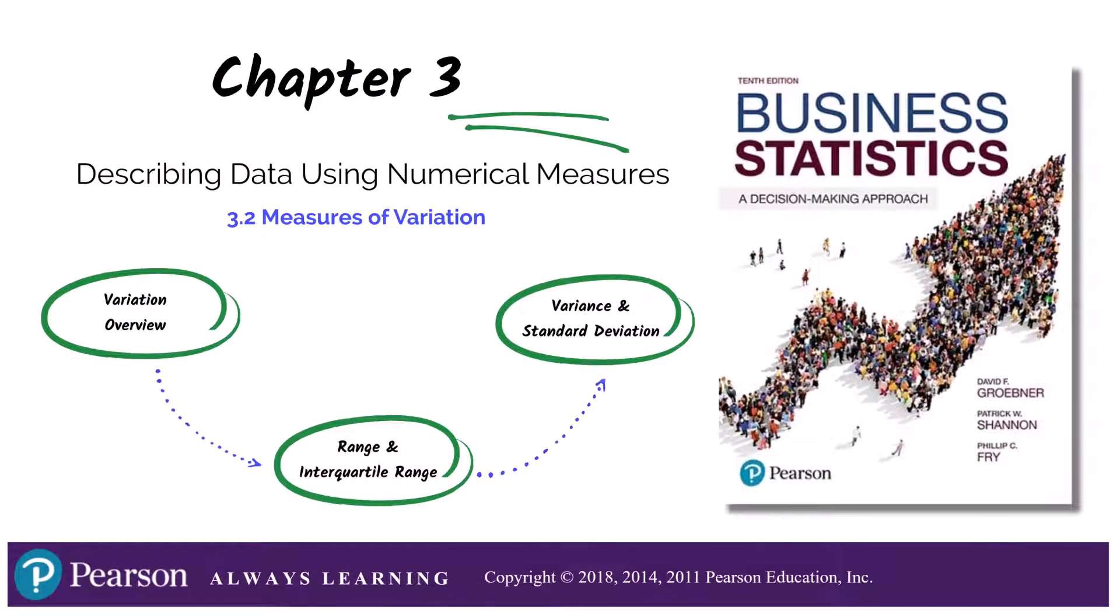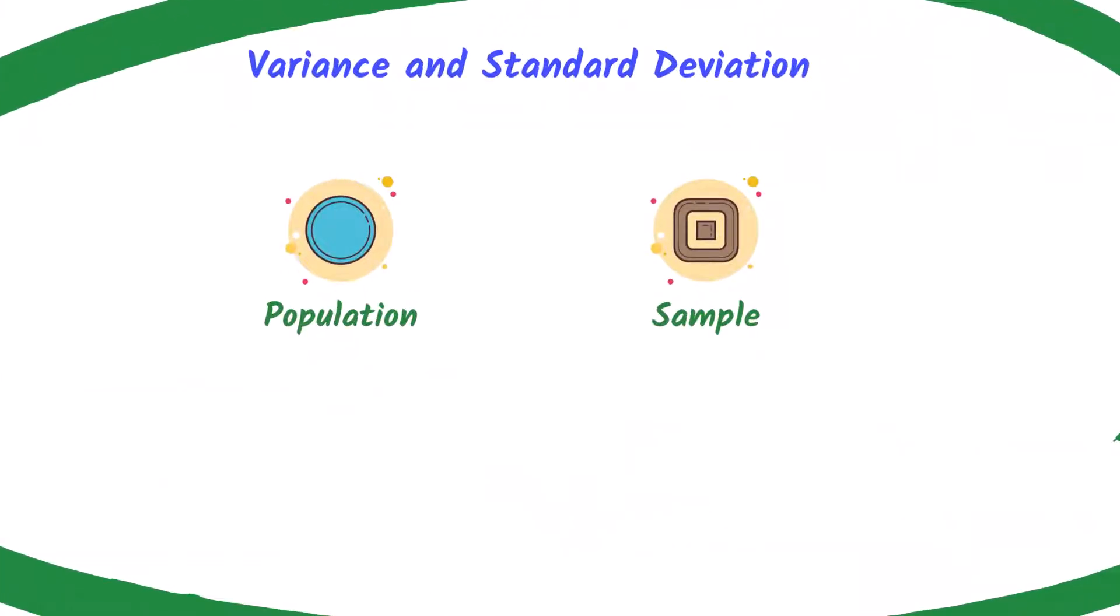So variance and standard deviation are the most common measures of variation. We'll be using these throughout the course, so we'll spend more time on them in this video. Variance and standard deviation can be calculated on a population variation and a sample. So let's review how to calculate on a population first.